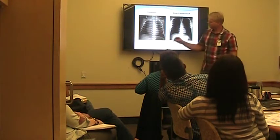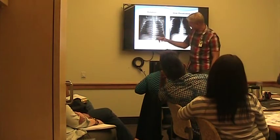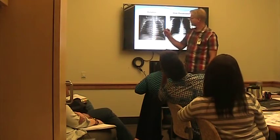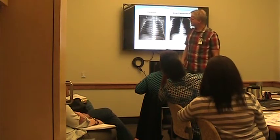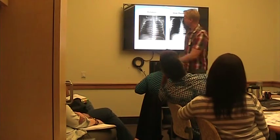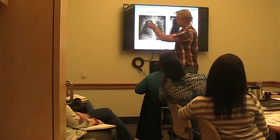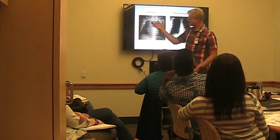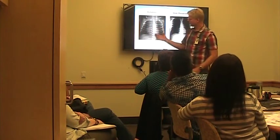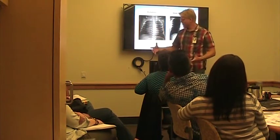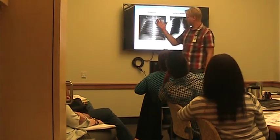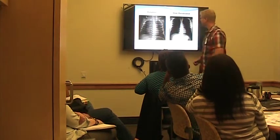We look at penetration here — we can see the intervertebral discs easily. Counting the posterior ribs: one through nine and a half. Penetration is reasonable and inspiration is reasonable, but we are rotated.